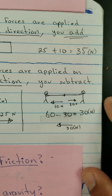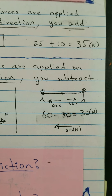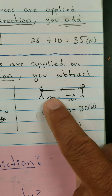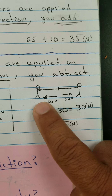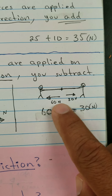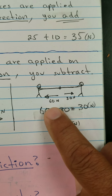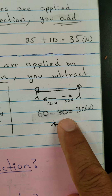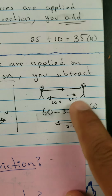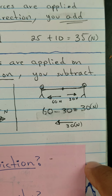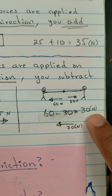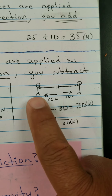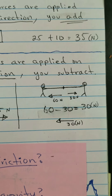This is another example of a tug of war — this time one person is applying a bigger force than the other. Since they're going in opposite directions, you subtract. The net force will be 30 Newtons, so that person will win.